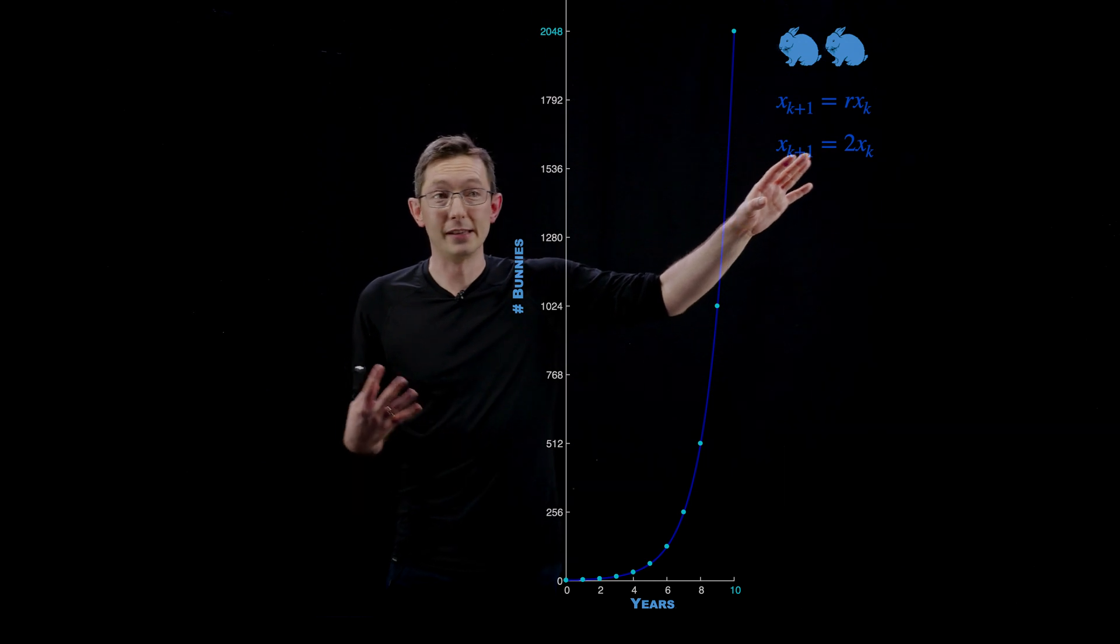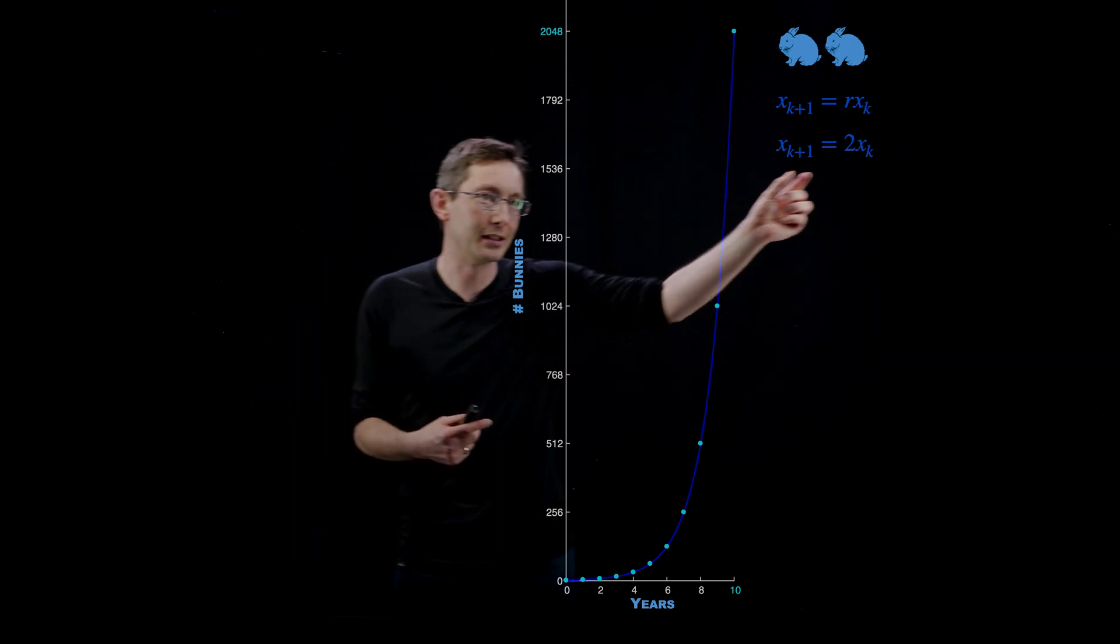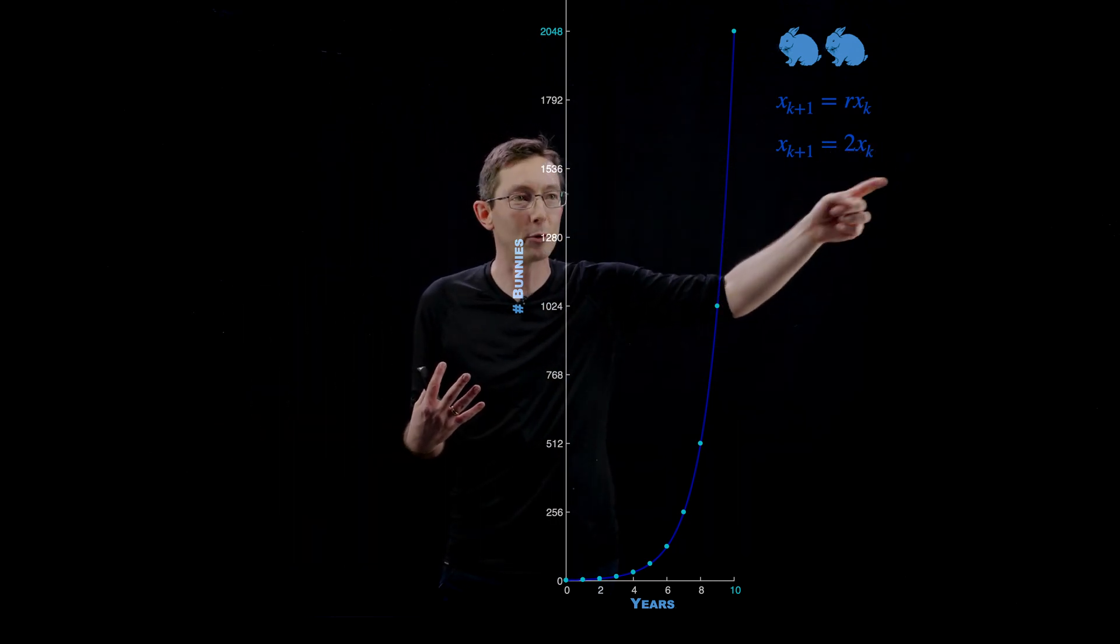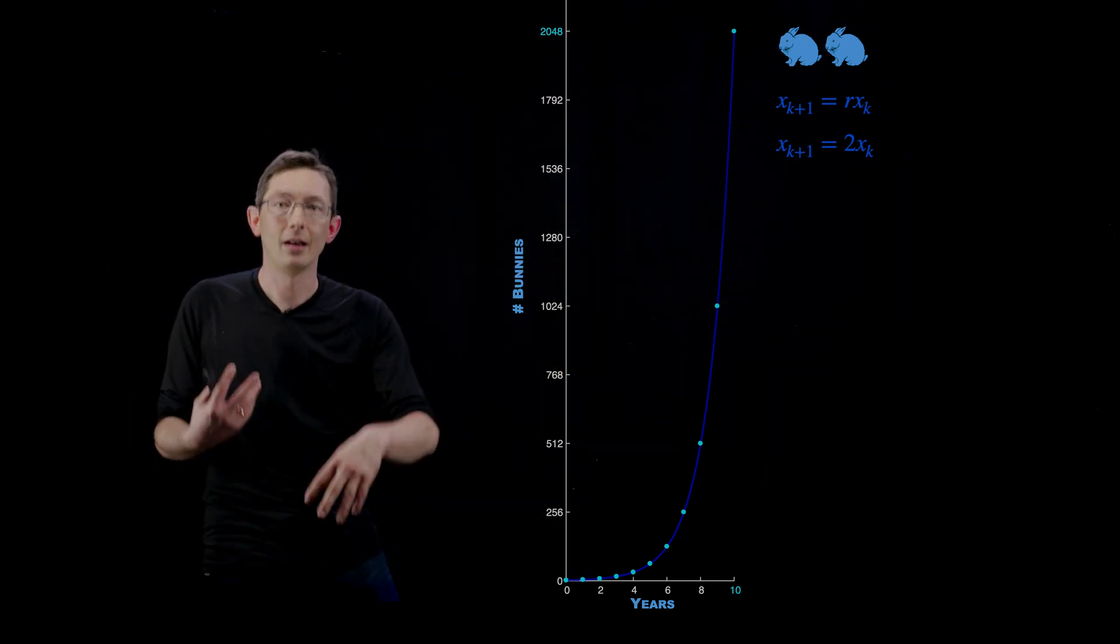This is super cool. This is a really simple mathematical expression that says that essentially the amount of bunnies, the rate at which bunnies grow is proportional to how many bunnies there are. That makes sense. If two bunnies double, I get two more.